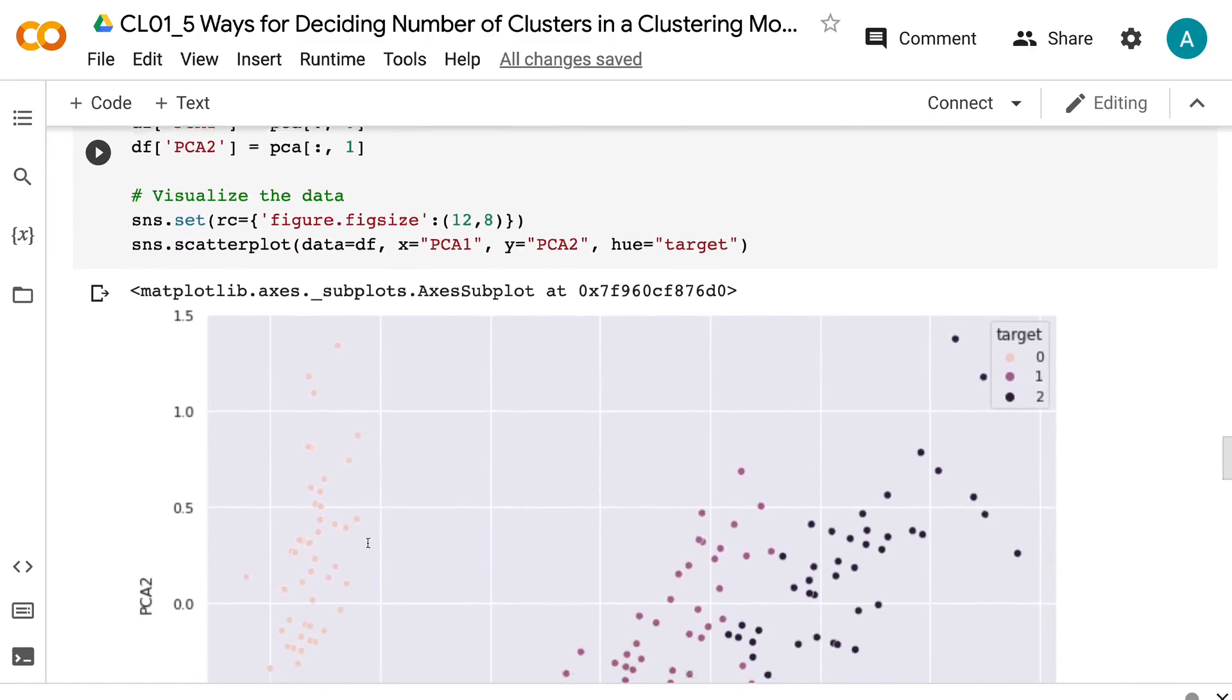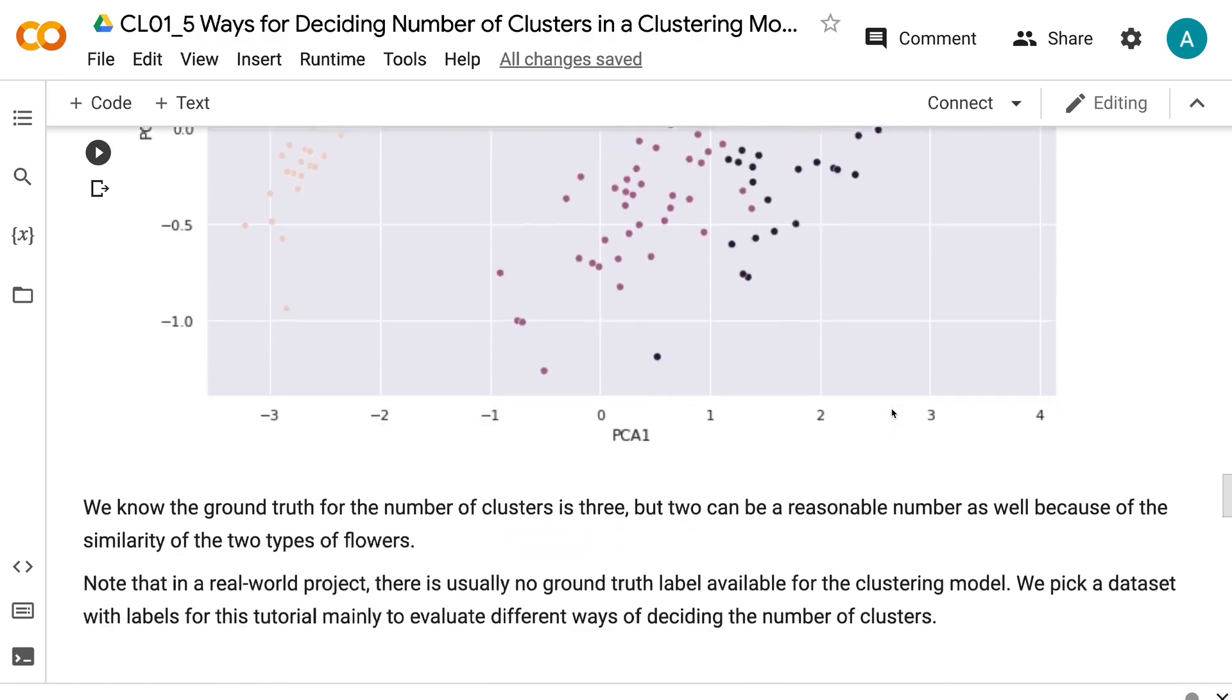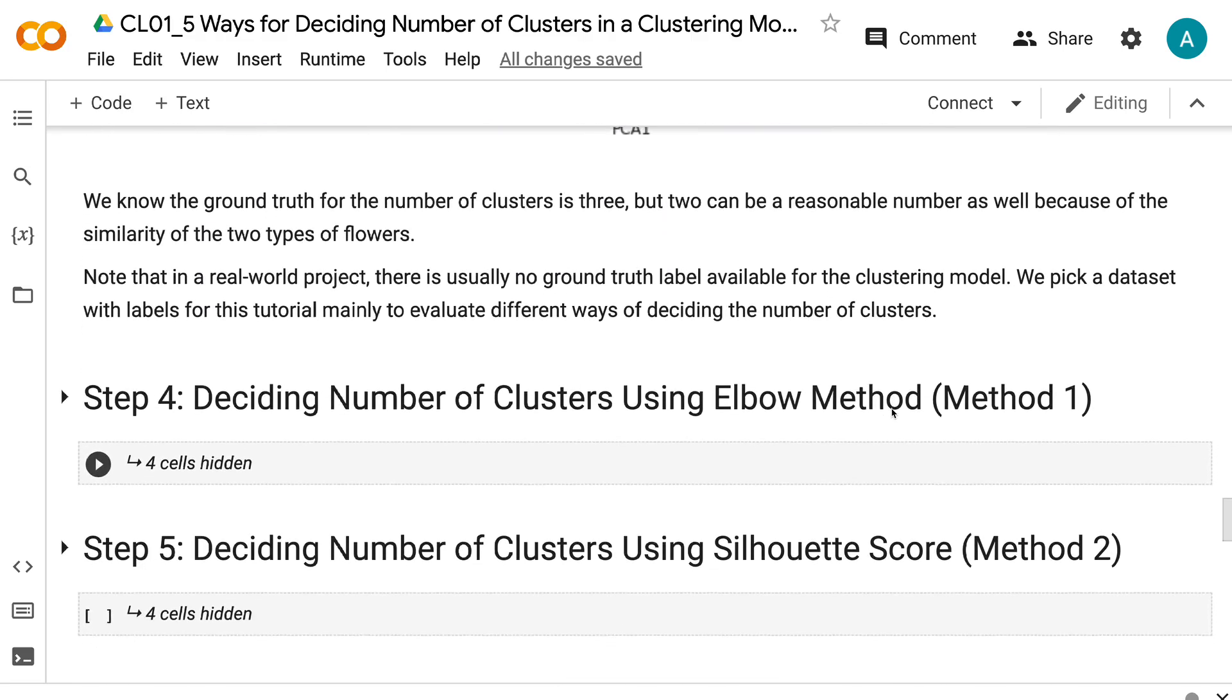We can see that among the three types of flowers, one type is quite different from the other two flowers. But the other two flowers are quite similar to each other. We know the ground truth for the number of clusters is three, but two can be a reasonable number as well because of the similarity of the two types of flowers.